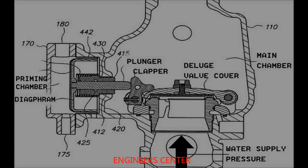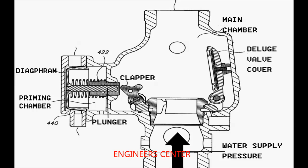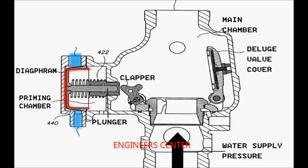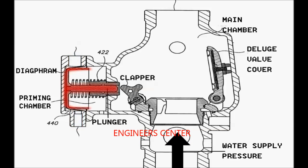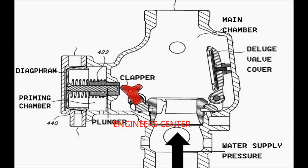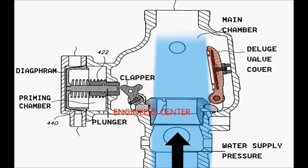The priming water pressure behind the diaphragm is balancing the water supply pressure, causing the deluge valve to be closed. The release of the priming water pressure behind the diaphragm causes the diaphragm together with the plunger to move backwards, removing the pressure on the clapper and consequently opening the deluge valve by the action of the water supply pressure.